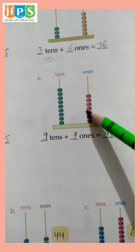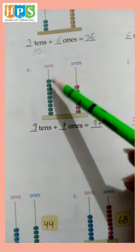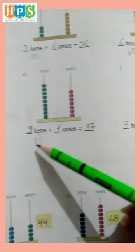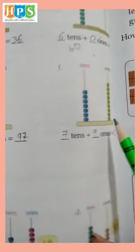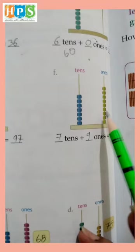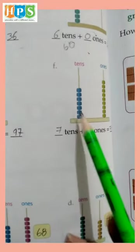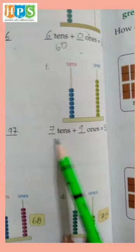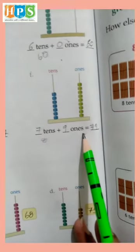One, two, three, four, five, six, seven - seven ones and one, two, three, four, five, six, seven, eight, nine - nine tens. Nine tens means ninety. Ninety plus seven equals ninety-seven. One, two, three, four, five, six, seven, eight, nine - nine ones and one, two, three, four, five, six, seven - seven tens means seventy. Seventy plus nine equals seventy-nine.